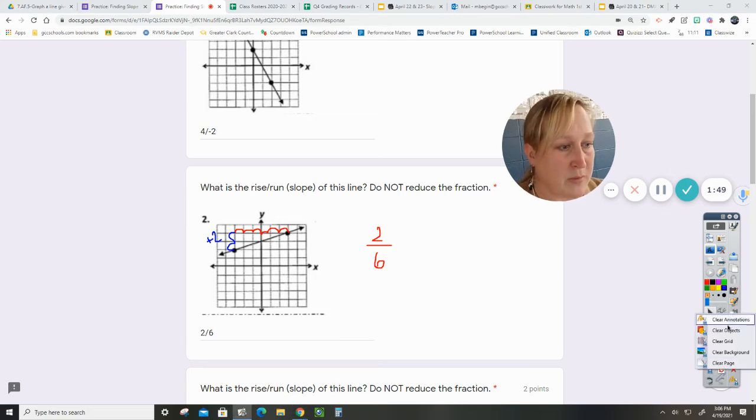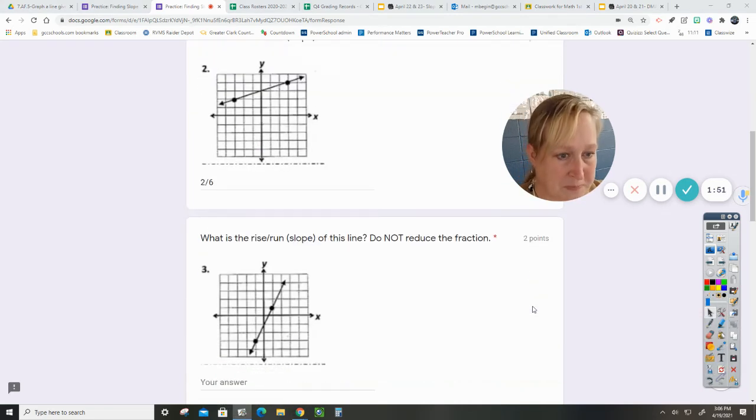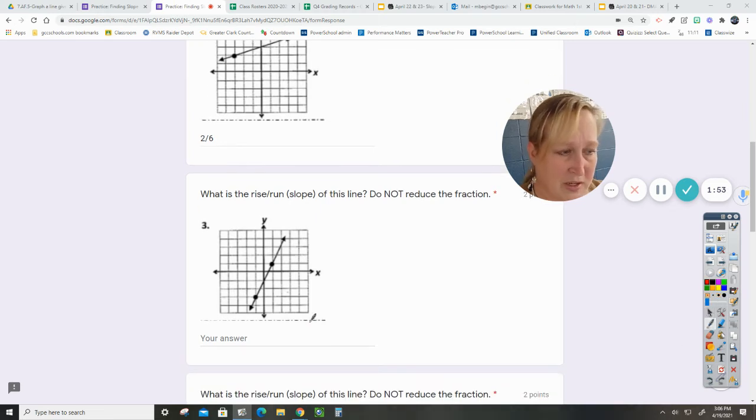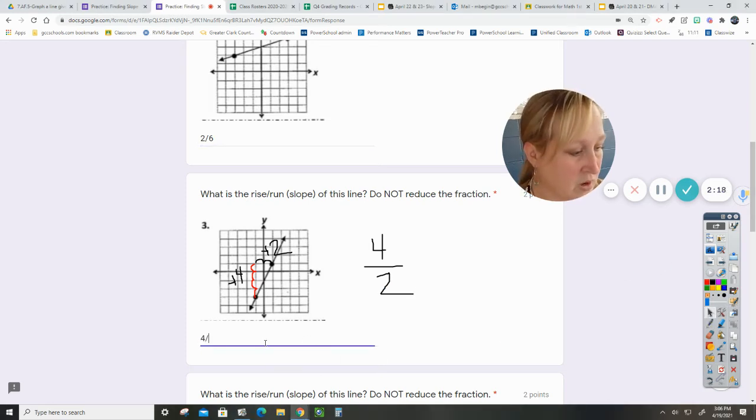We'll go on to the next problem and do the same thing. Rise over run. This one looks like it is positive because it is going uphill. Rise is one, two, three, four. My run is one, two. So this is plus four plus two. So rise over run would be four over two.